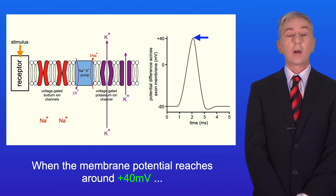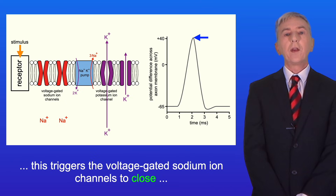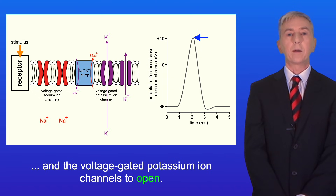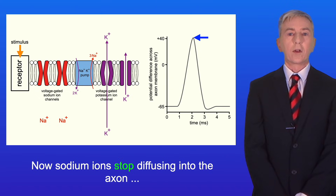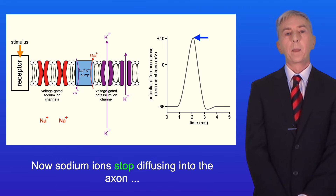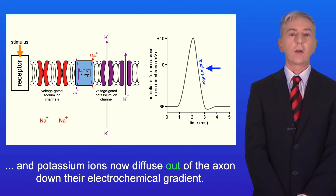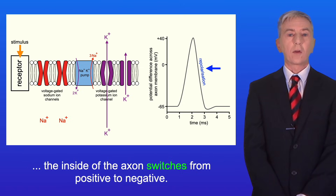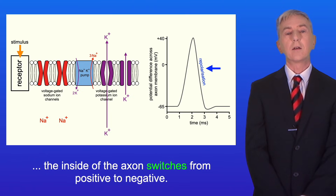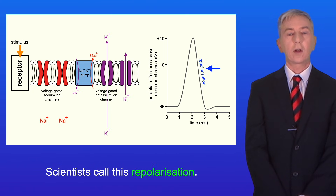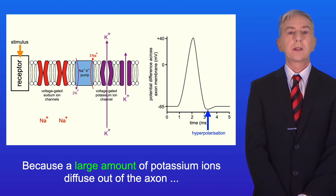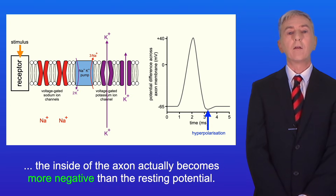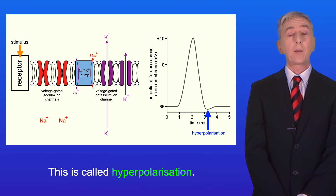When the membrane potential reaches around plus 40 millivolts, this triggers the voltage-gated sodium ion channels to close and the voltage-gated potassium ion channels to open. Sodium ions stop diffusing into the axon, and potassium ions now diffuse out of the axon down their electrochemical gradient. As potassium ions diffuse out, the inside of the axon switches from positive to negative — scientists call this repolarization. Because a large amount of potassium ions diffuse out, the inside of the axon actually becomes more negative than the resting potential.